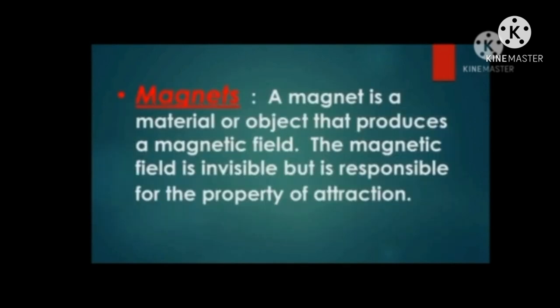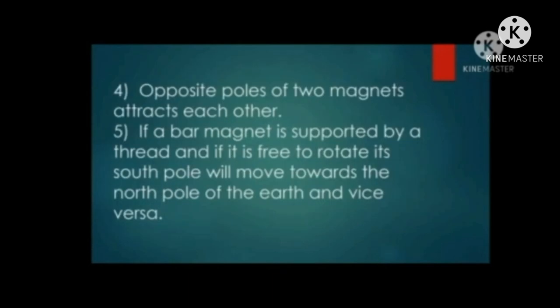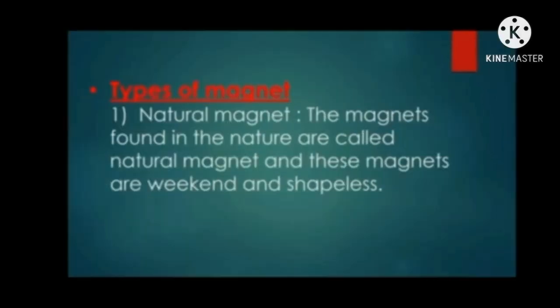A magnet is a material or object that produces a magnetic field. The magnetic field is invisible but is responsible for the property of attraction. Properties of a magnet: It attracts objects of iron, cobalt, and nickel. The force of attraction is greater at its poles than in the middle. Like poles repel each other; opposite poles attract. A freely suspended bar magnet aligns with its south pole towards the earth's north pole.